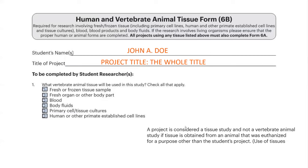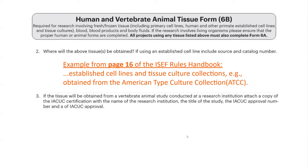Now let's hear from Charlie. Question two refers back to the first question that Megan just walked us through. For any type of animal tissue that was checked in question one, you will then identify where it was obtained for question two.